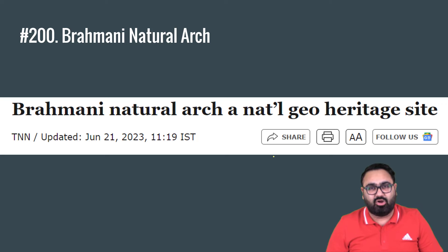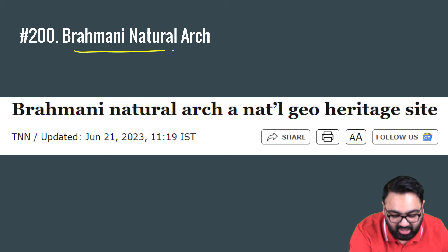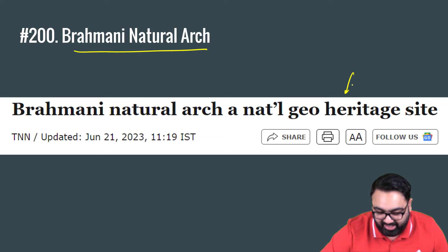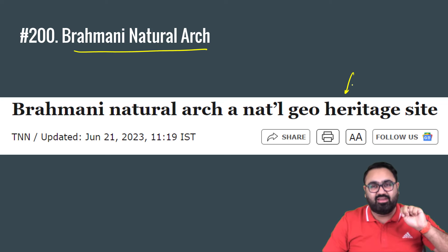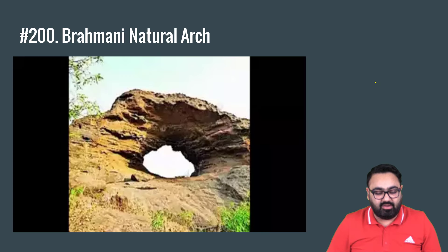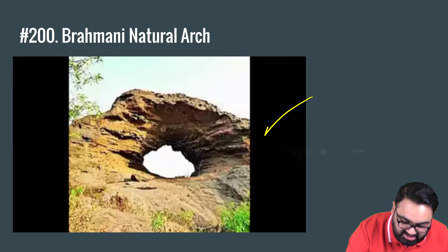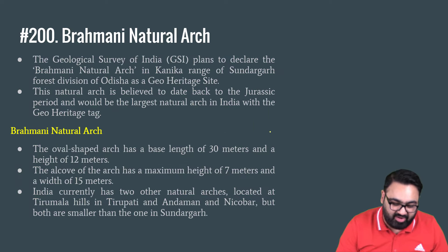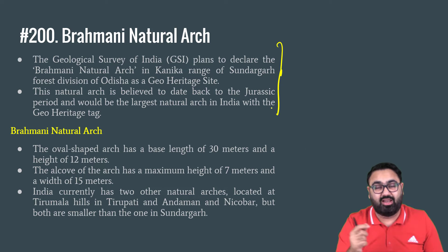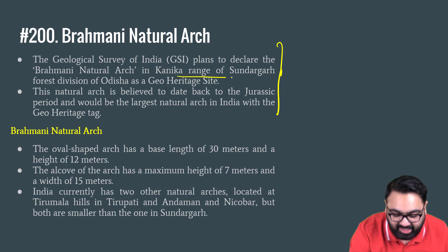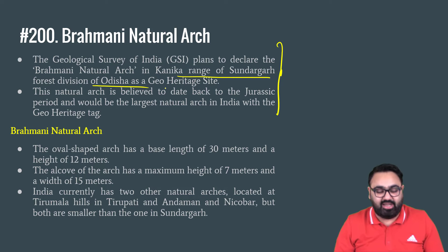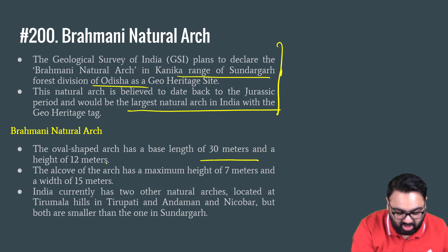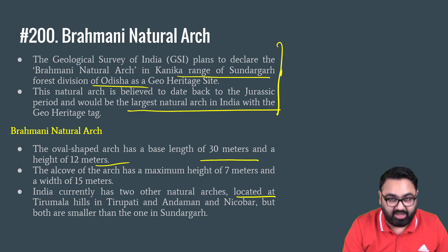The last news from class 19 is that the Brahmani Natural Arch has been given national geo heritage site status. This is the third site to receive this status — two others were discussed in the previous class. The Brahmani Natural Arch is the largest naturally occurring arch in the entire world. There are a lot of theories about how it came into being — it is said to date from the age of the dinosaurs. The Geological Survey of India is the agency that gives geological heritage tags to these sites. It is present in the Kanika Range of Sundargarh Forest Division of Odisha. It dates back to the Jurassic period, with a base length of about 30 meters and height of about 12 meters.